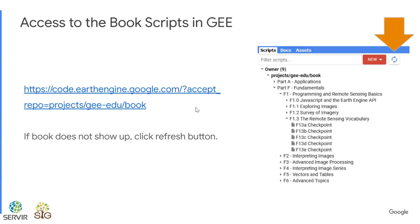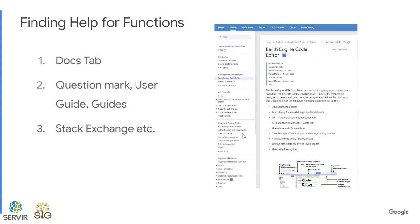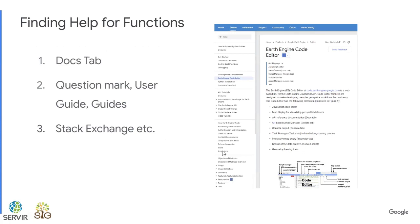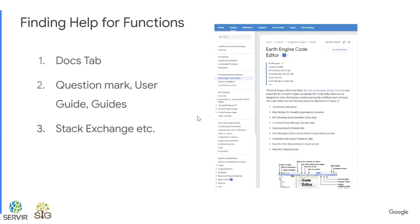Before we dive into the practicum, two quick notes. First, you can access the book scripts in Google Earth Engine through the links throughout the book — if it does not show up, click the refresh button. Second, help for functions is widely available in the docs tab, via the question mark for user guides, and on Stack Exchange.